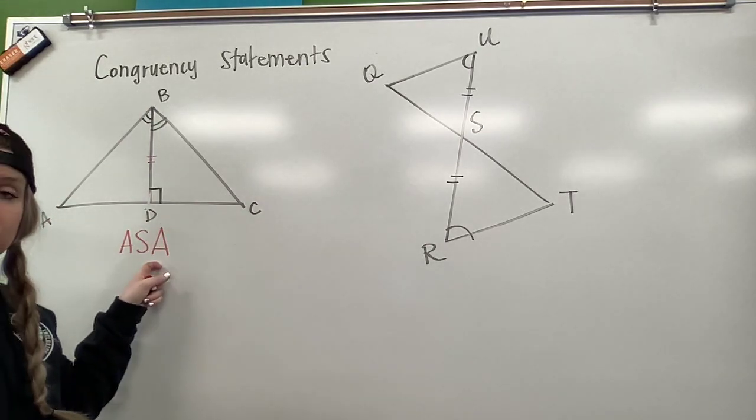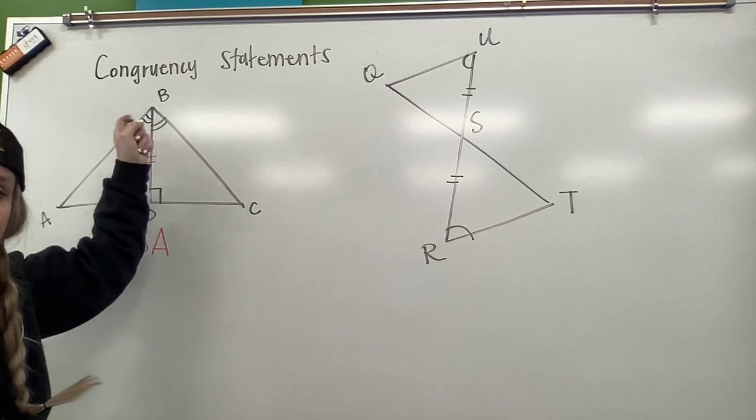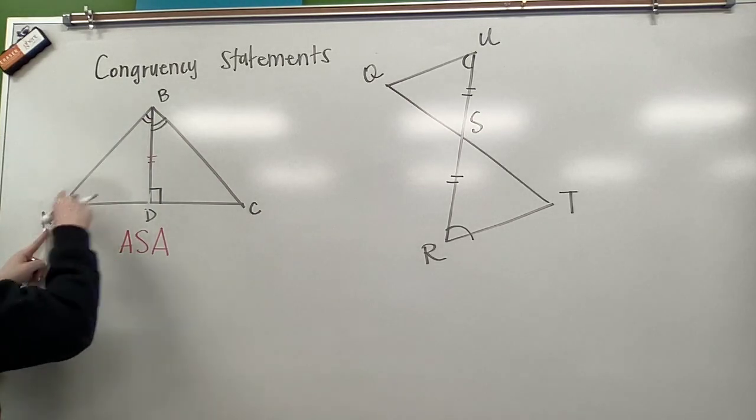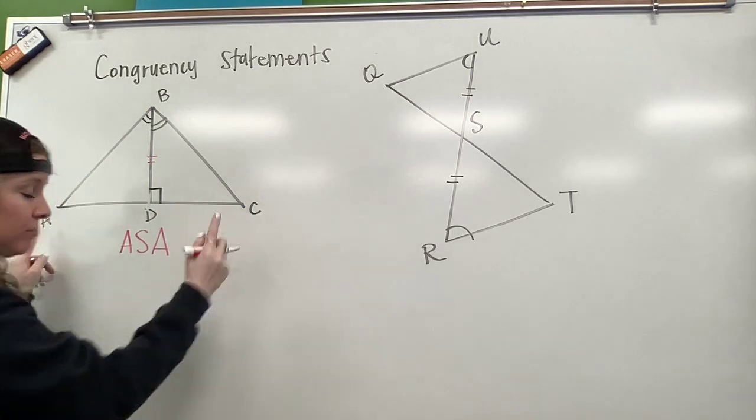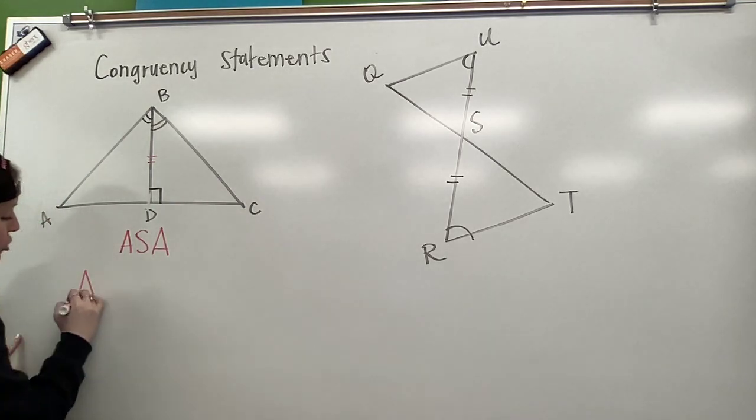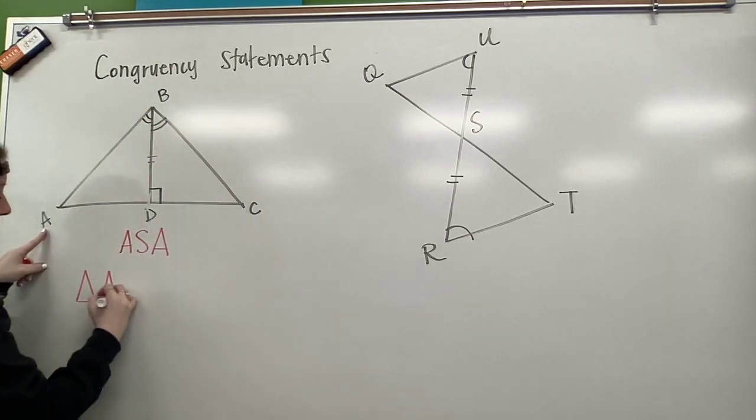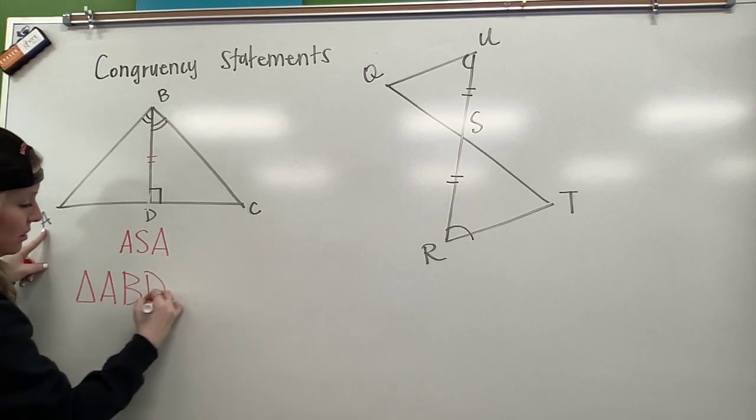That's how we know that these triangles are congruent, angle, side, angle. So I want to know how is triangle A congruent to triangle B? So I'm going to label my first triangle and I'm going to call it A, B, D.